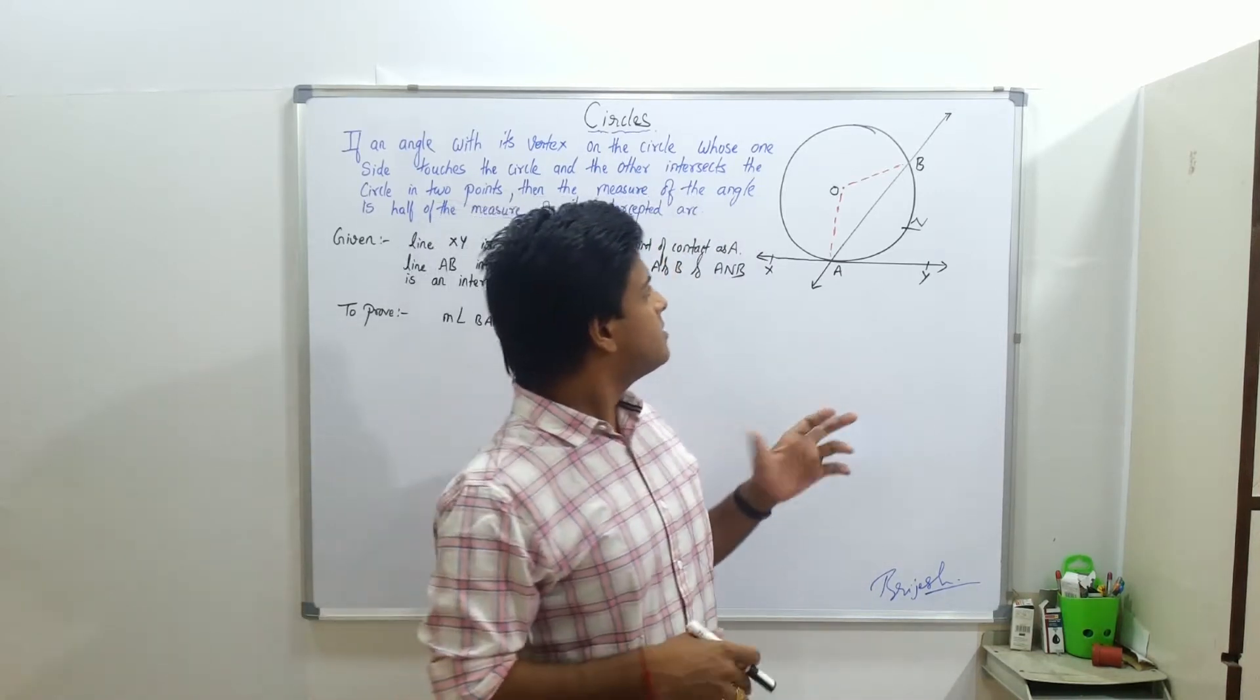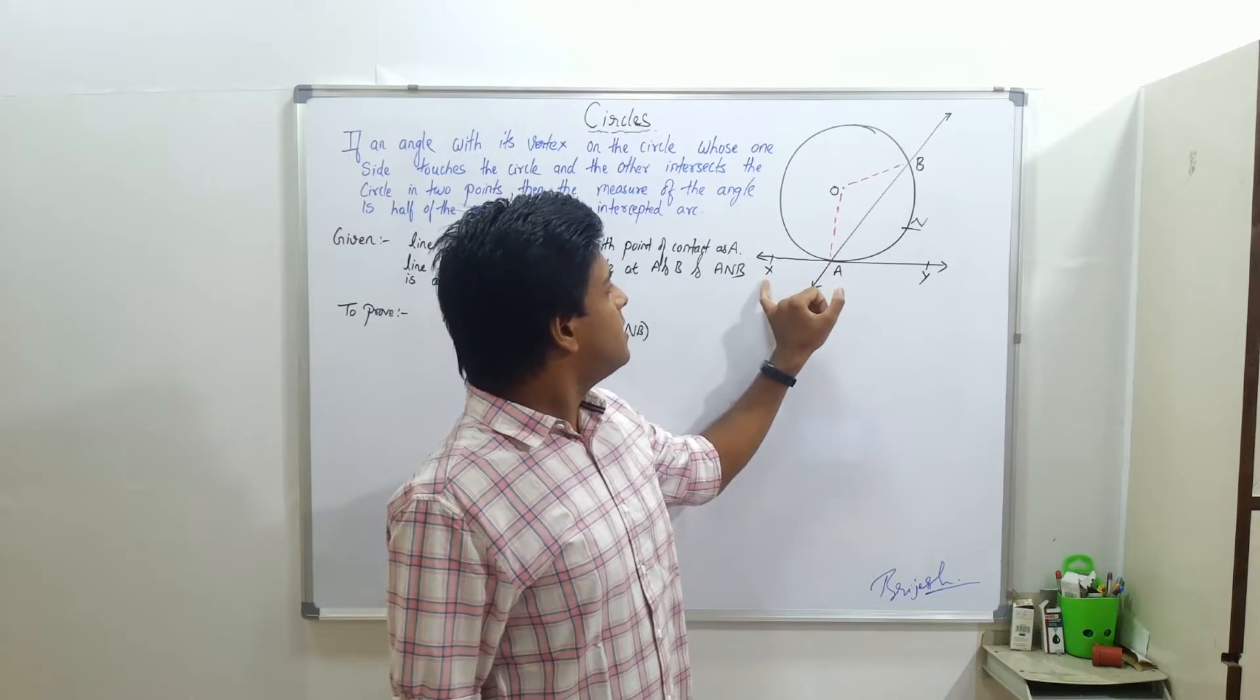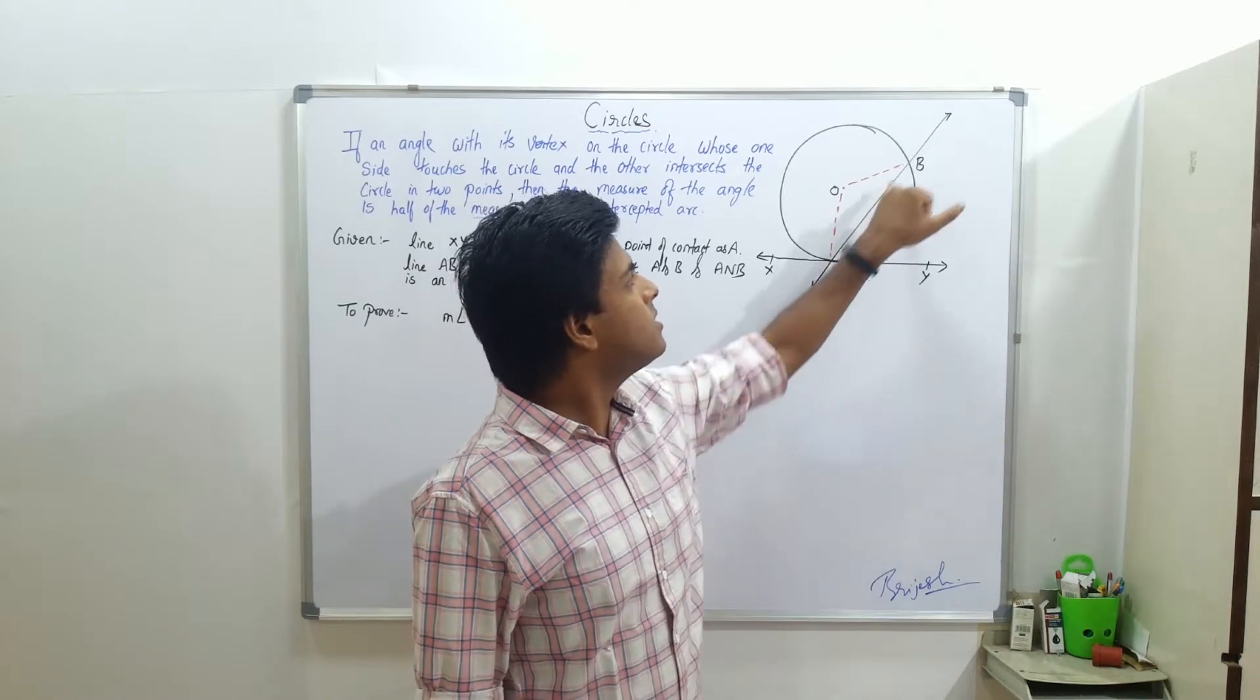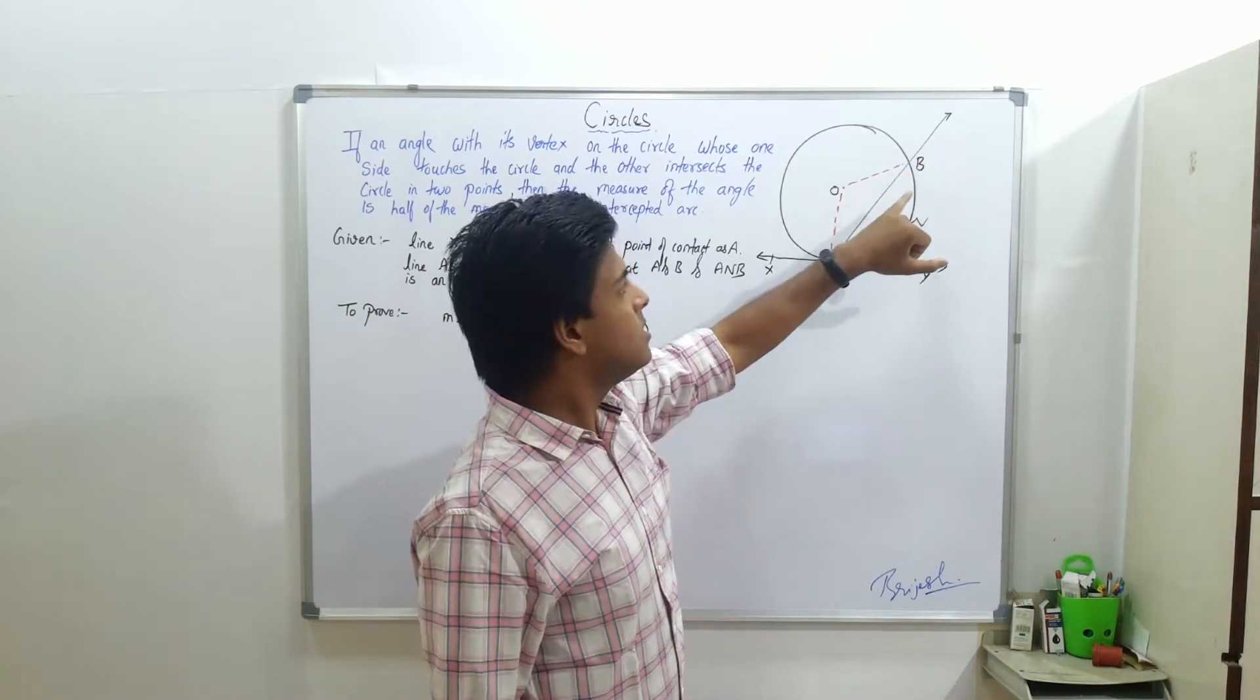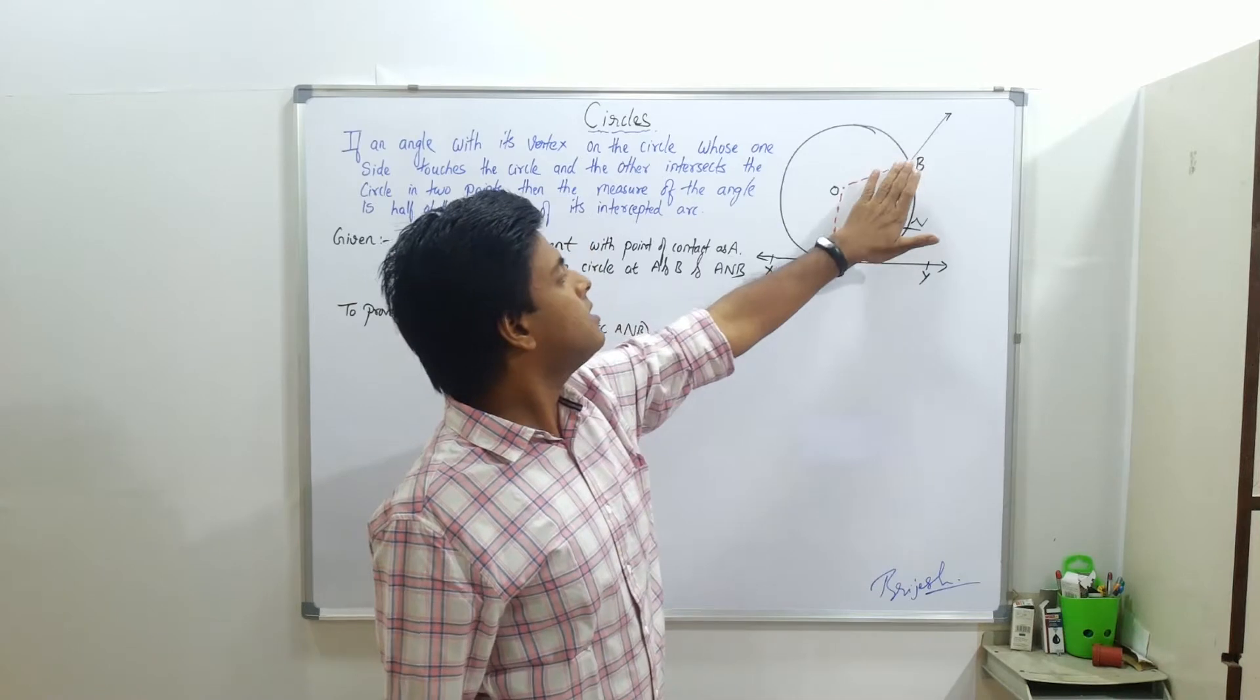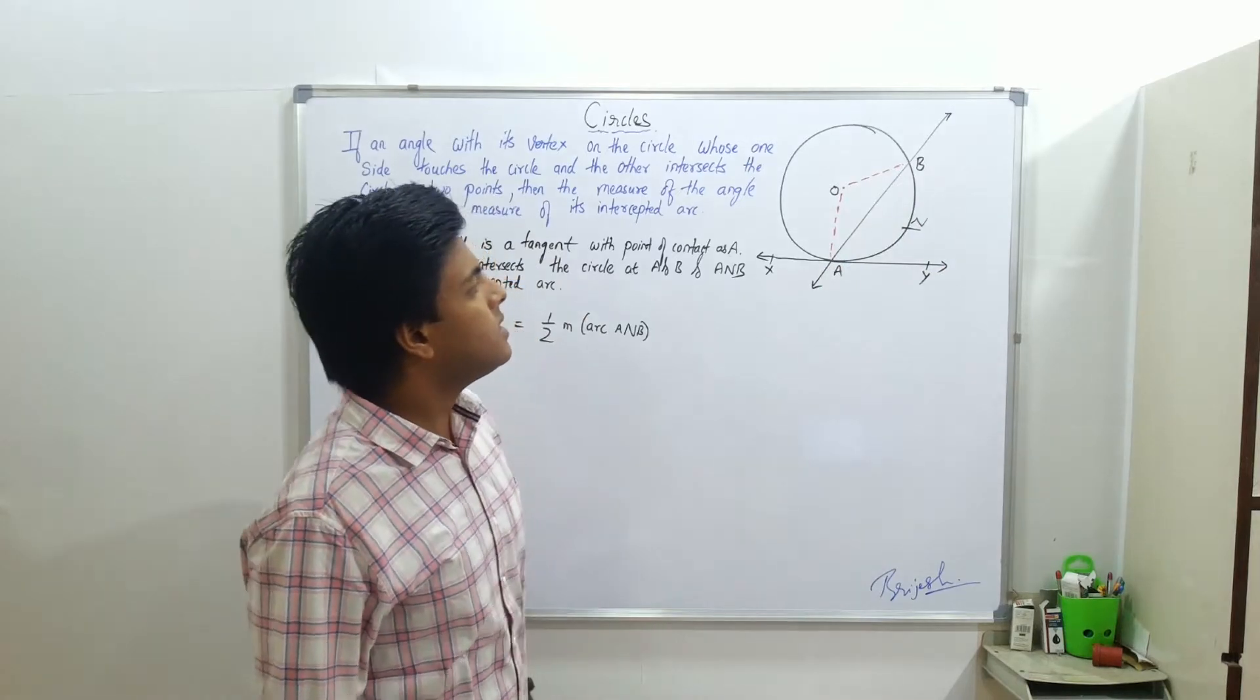This theorem says that if this is a circle with center O and a line XY touches the circle at one point A, and from that point we have a secant line which is cutting the circle at another point B, then in that case measure of angle BAC should be equal to half of measure of arc BA.